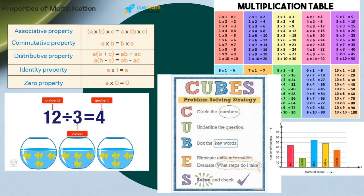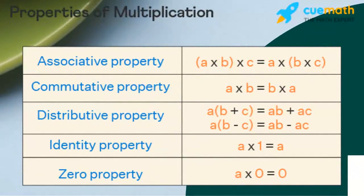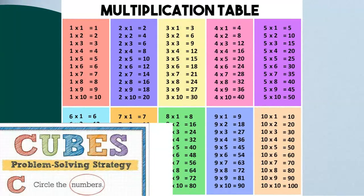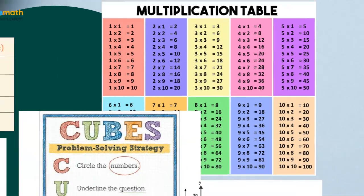You will also learn about the properties of multiplication, which include the associative property, commutative property, distributive property, identity property, as well as the zero property of multiplication. As you know, you have to memorize the multiplication table by heart so you can engage happily and collaboratively in class and at home when it comes to solving multiplication facts and word problems.